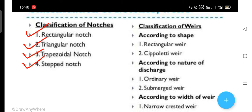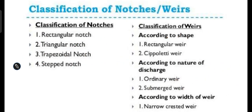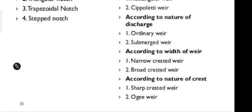Weirs, if we talk about the shape of weirs, there are rectangular weirs and cipolletti weirs. According to nature, there are ordinary weirs or submerged weirs.